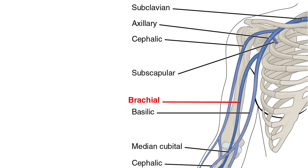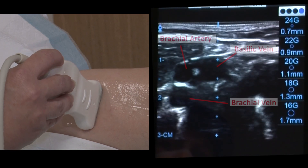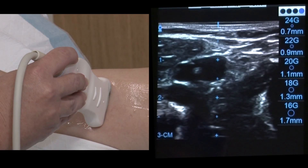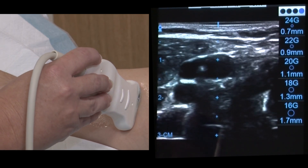The brachial vein or veins are usually found in a neurovascular bundle within the brachial artery and median nerve. This can make insertion more challenging, but it is not a contraindication to selection. The cephalic vein is usually the smallest in diameter and can join the axillary vein at an angle, making PICC advancement difficult. This ultrasound view shows the basilic vein on the right and brachial artery and veins on the left. Note the artery is seen to be pulsatile and non-compressible under pressure, whereas the veins can be compressed.